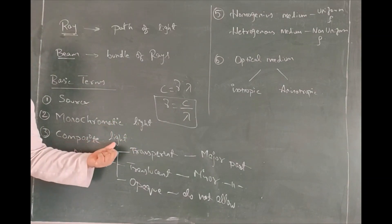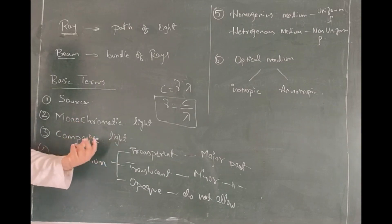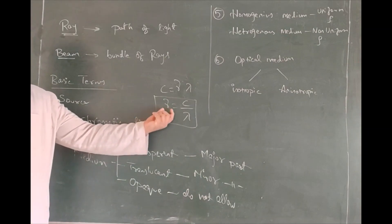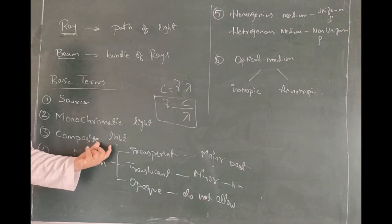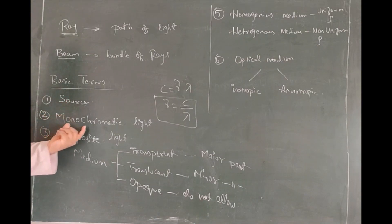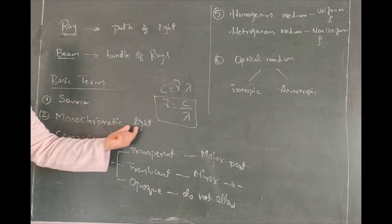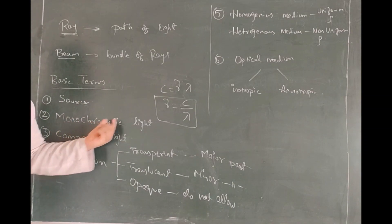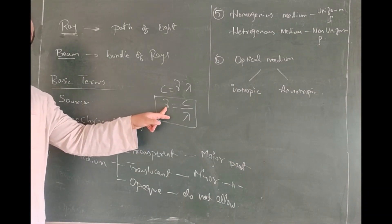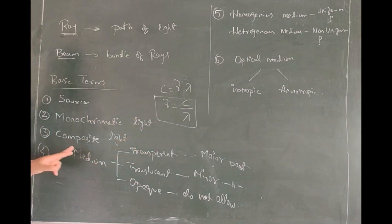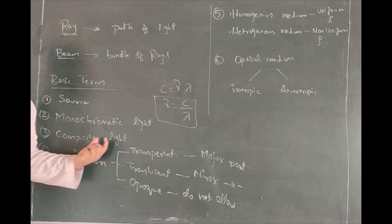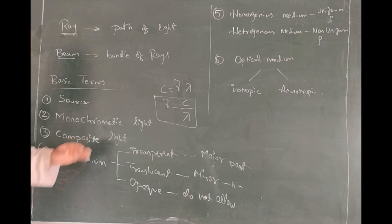Coming to composite light. Composite means a group of, so composite light would mean light which has more than one wavelength or more than one frequency.